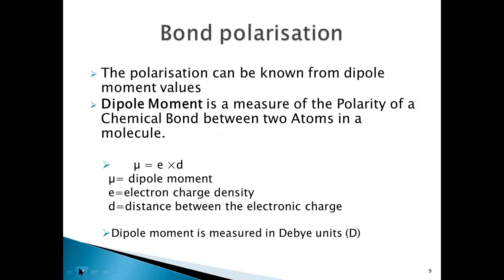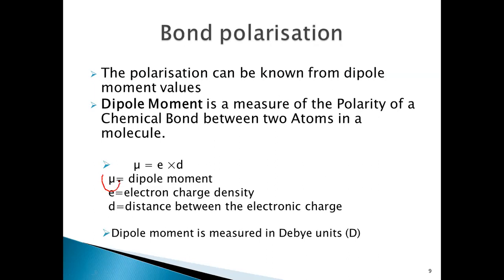Bond polarization can be measured with the help of dipole moment, represented by mu. The formula is mu = e × d, where e is the electron charge density and d is the distance between the electronic charges. This is measured in Debye units, represented by D. So polarity can be measured with the help of dipole moment.